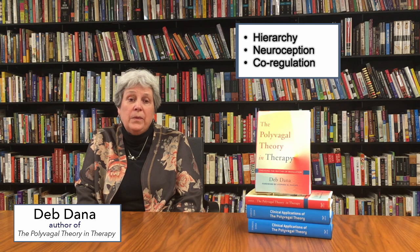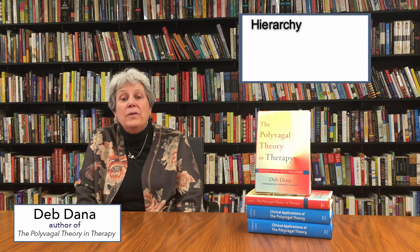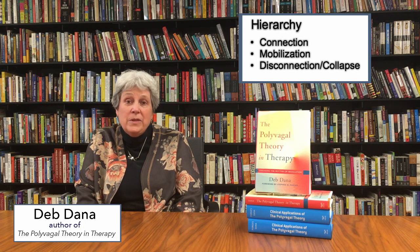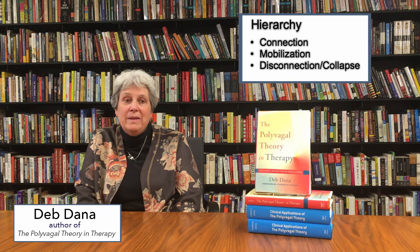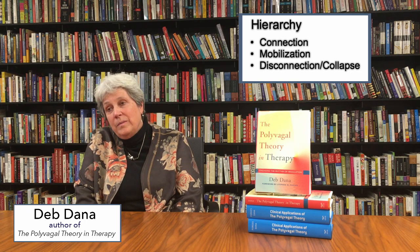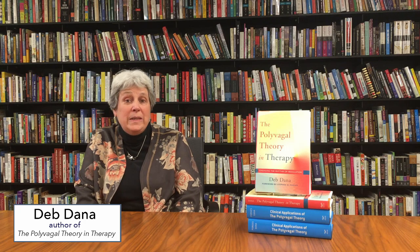Hierarchy refers to the three states that our nervous system takes us through — many times a day, in small ways and big ways — through connection, which is ventral vagal; through mobilization, which is sympathetic and brings fight-and-flight; and then through disconnection and collapse, which is dorsal vagal, a flavor of disappearing. Polyvagal theory shows us that this is a predictable hierarchy; we move through these states in a predictable order.